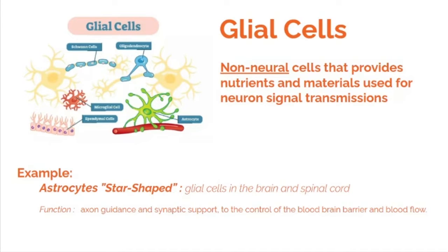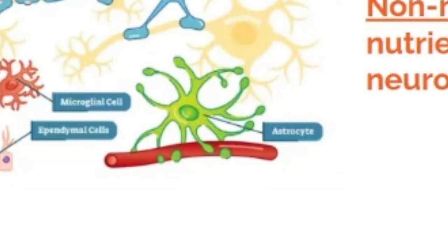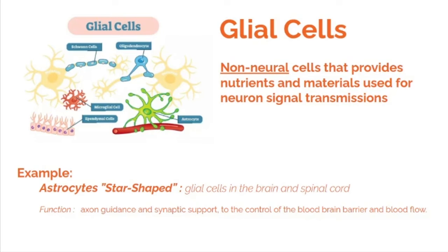Glial cells are non-neural cells that provide nutrients and materials used for neuron signal transmission. As an example, astrocytes are star-shaped glial cells in the brain and spinal cord — they function in axon guidance, synaptic support, control of the blood-brain barrier, and blood flow. Other glial cells include Schwann cells, oligodendrocytes, microglial cells, and ependymal cells.